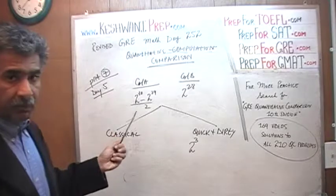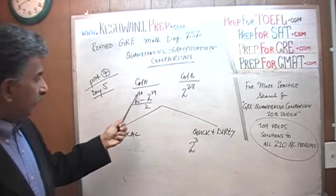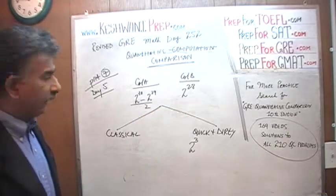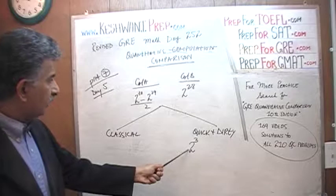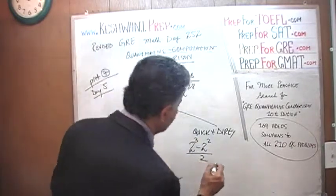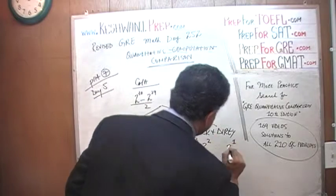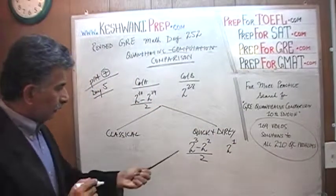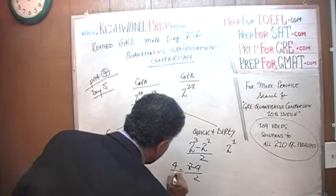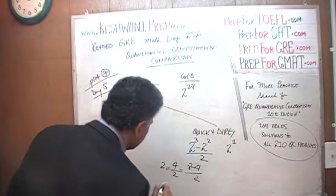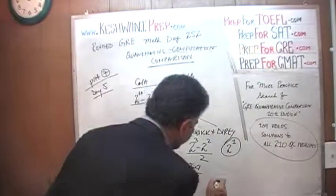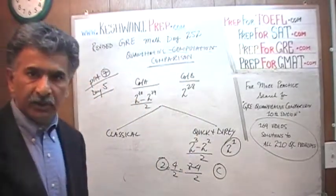So 2 raised to 30 becomes 2 raised to 3, and 2 raised to 29 becomes 2 raised to 2, and 2 raised to 28 becomes 2 raised to 1. So column A becomes: two raised to 3 is 8, minus 2 raised to 2 which is 4, giving 8 minus 4 over 2, which is 4 over 2, which is 2. Column B is 2 raised to 1 which is also 2. This boils down to 2 versus 2 — the answer is C.